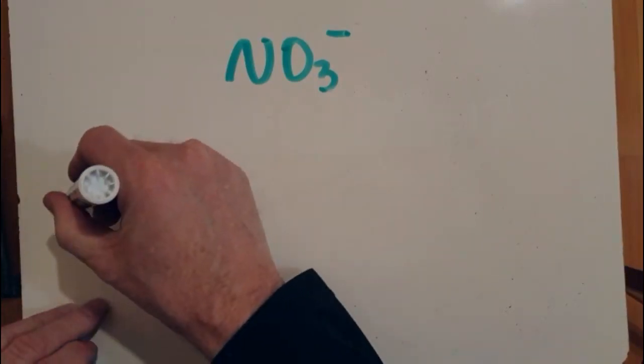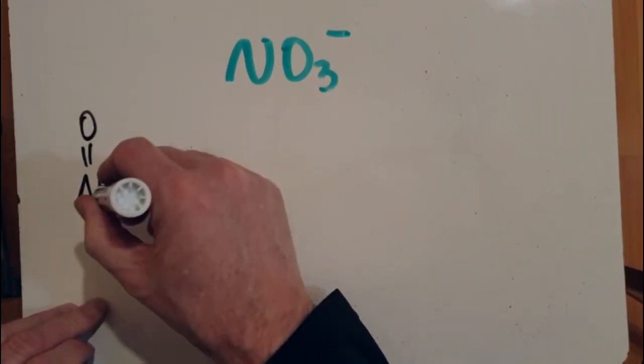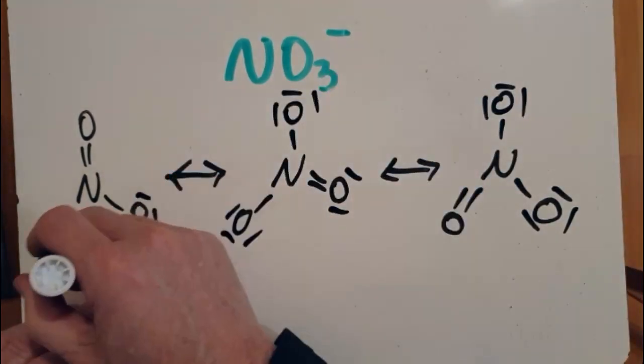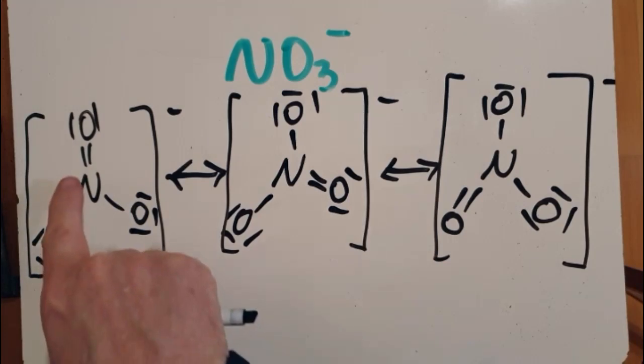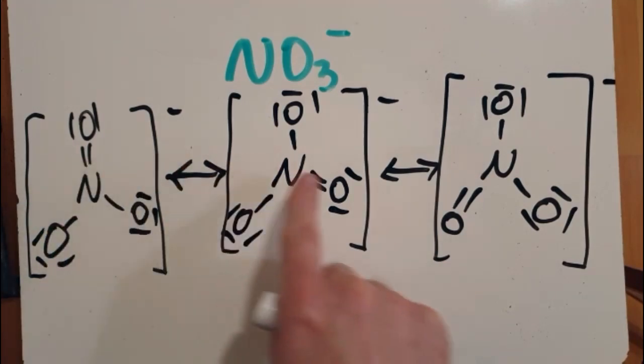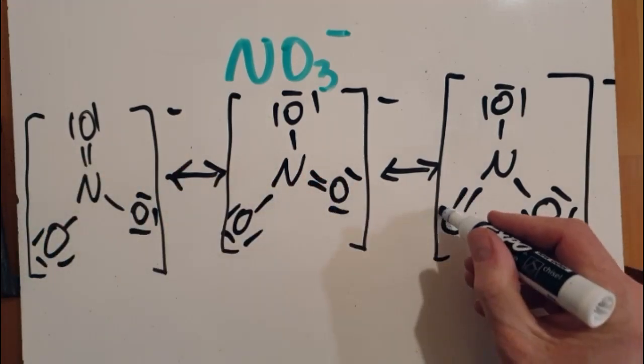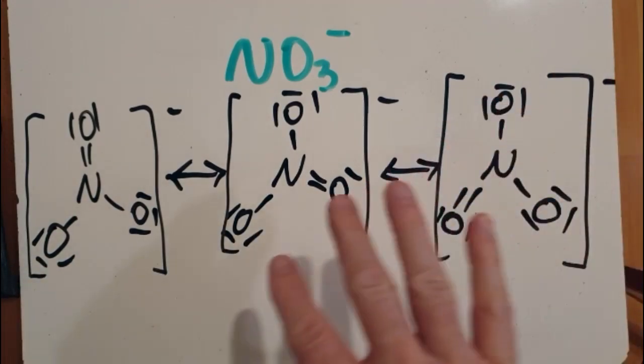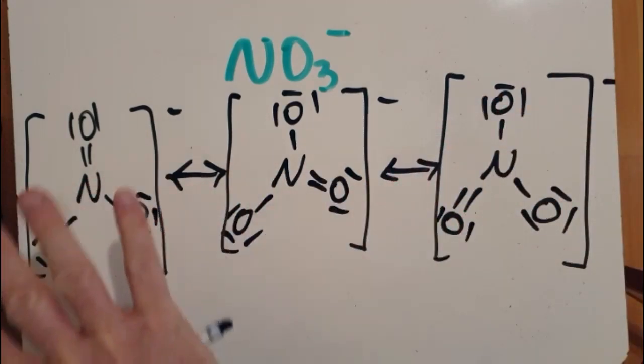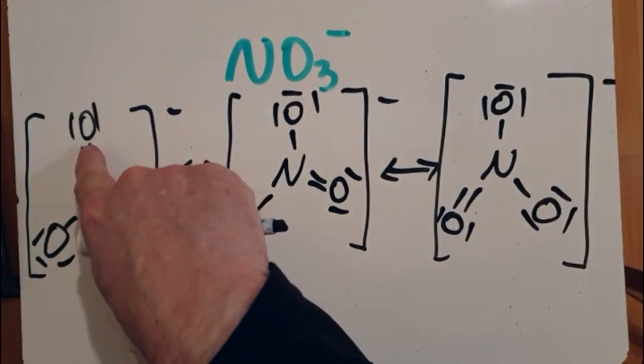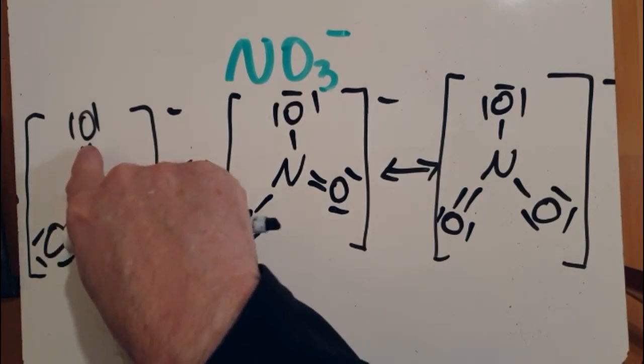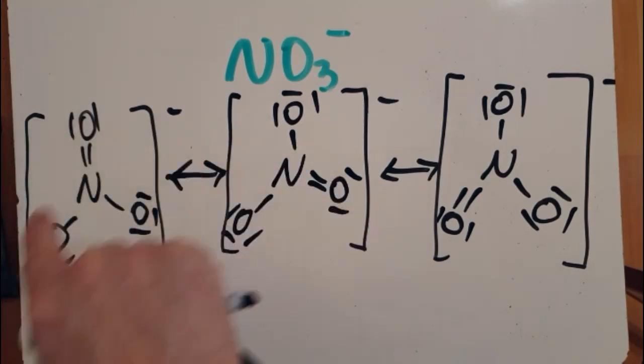So the nitrate ion has three resonant structures, and notice that essentially the double bond just travels around the molecule. So which of these is the true nitrate ion? Well, the truth is it's none of these. It's kind of an average of all of them. This double bond here is really a one and a third bond, as is that one and that one there.